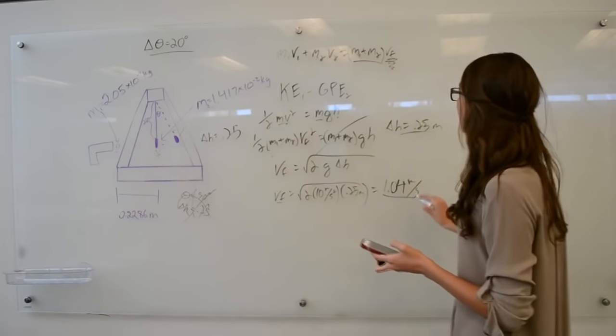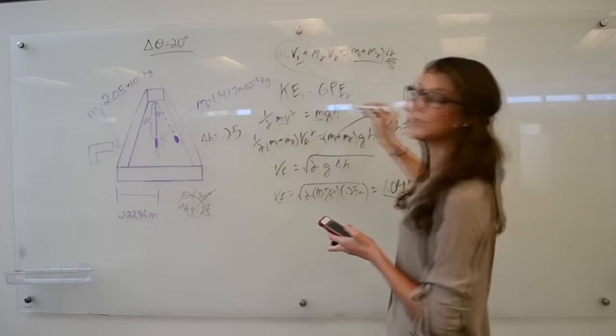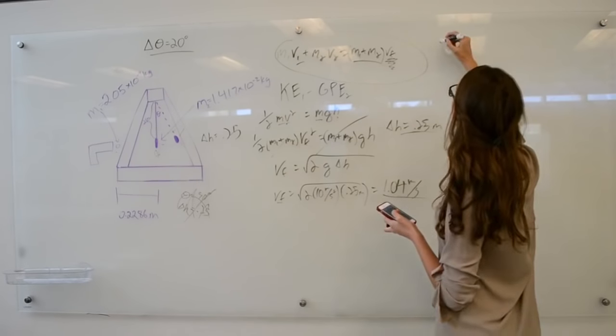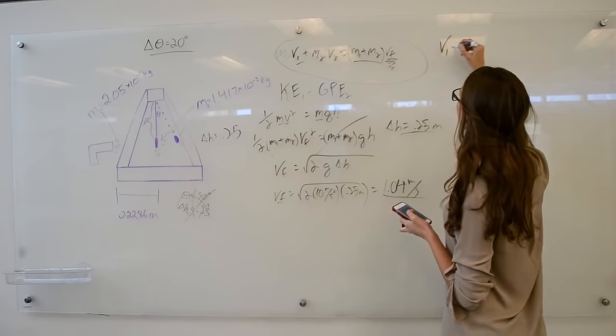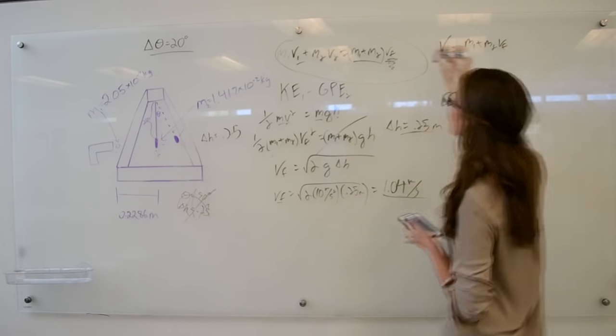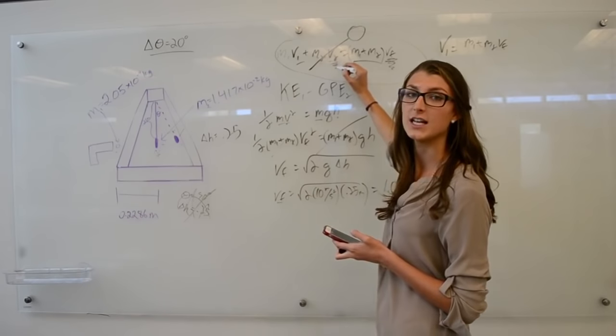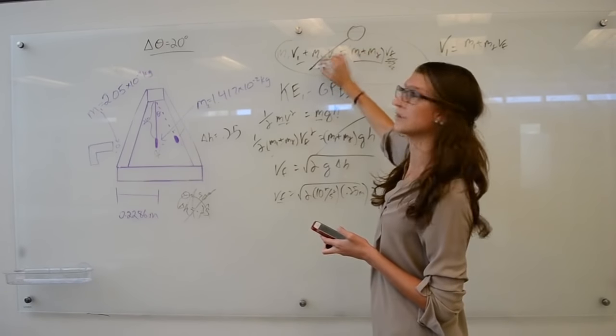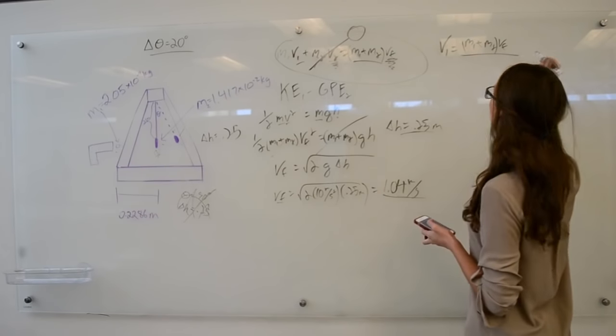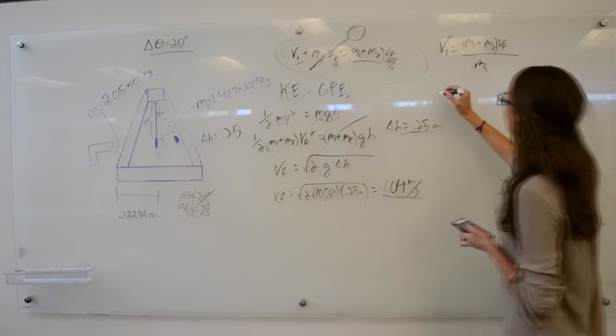Now that we have the final velocity, we can use this momentum equation to figure out V1. If we rearrange this equation, we have V1 is equal to M1 plus M2 times VF. This whole term we can disregard because it's equal to zero, because we know that the initial velocity of the clay is equal to zero. So we have M1 plus M2 times VF over M1.